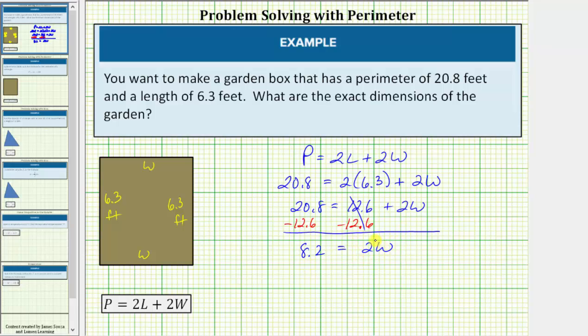2w means 2 times w. And therefore to solve for w, we need to undo this multiplication by dividing both sides by 2.